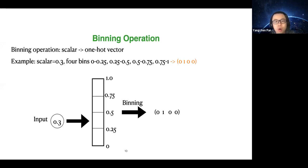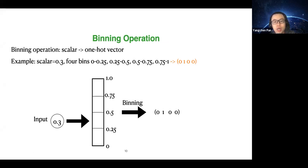Before diving into the details of our activation function, I want to review some relevant background. The most basic sparse representation is the binning operation — in our published work we call it the tiding operation. A binning operation maps a scalar to a one-hot vector. For example, with an input scalar of 0.3 and four bins from 0 to 0.25, 0.25 to 0.5, 0.5 to 0.75, and 0.75 to 1, the input hits the second bin, so the output vector is [0, 1, 0, 0].